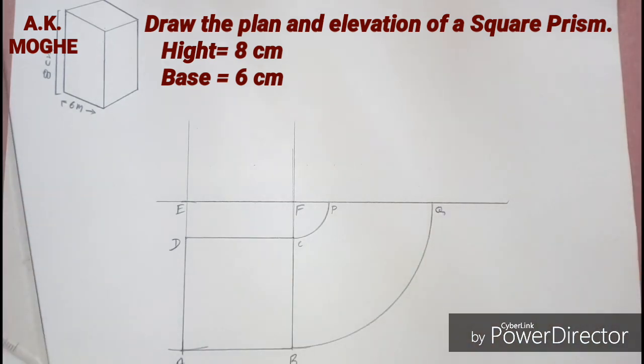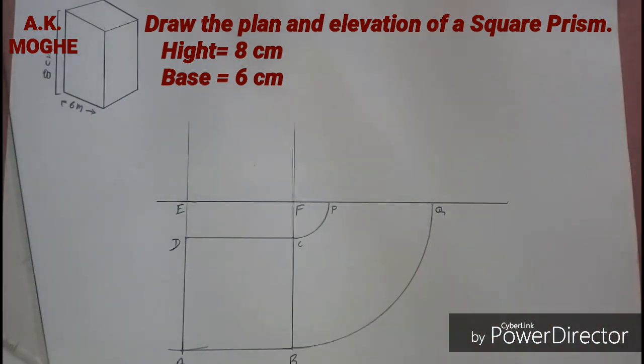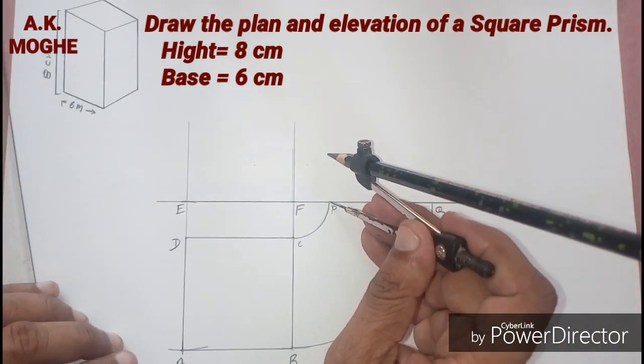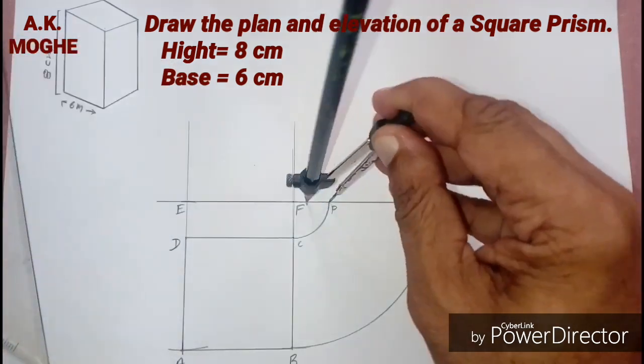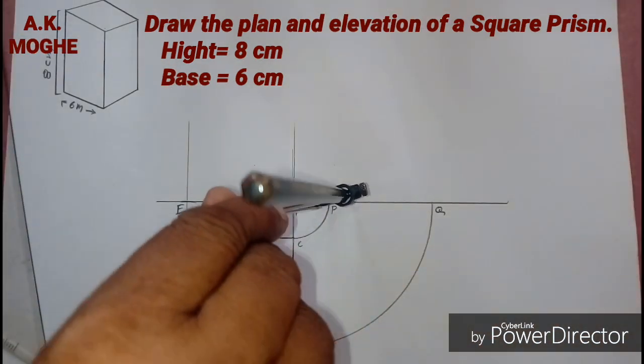So from point E we have to take the height of the prism, 8 cm, and mark an arc from the point E for the side view.